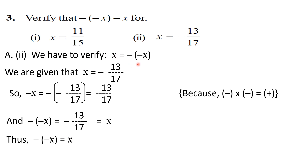Method two, part two: given x equals minus thirteen upon seventeen. Minus x equals minus bracket minus thirteen upon seventeen close bracket — the two minuses cancel, giving positive thirteen upon seventeen. Then minus minus x equals minus of minus x, which equals minus thirteen upon seventeen, which equals x. So minus minus x equals x is verified. These were the first three questions of exercise 1.3. Keep studying hard, regularly and with discipline. Goodbye till the next video, thank you very much.